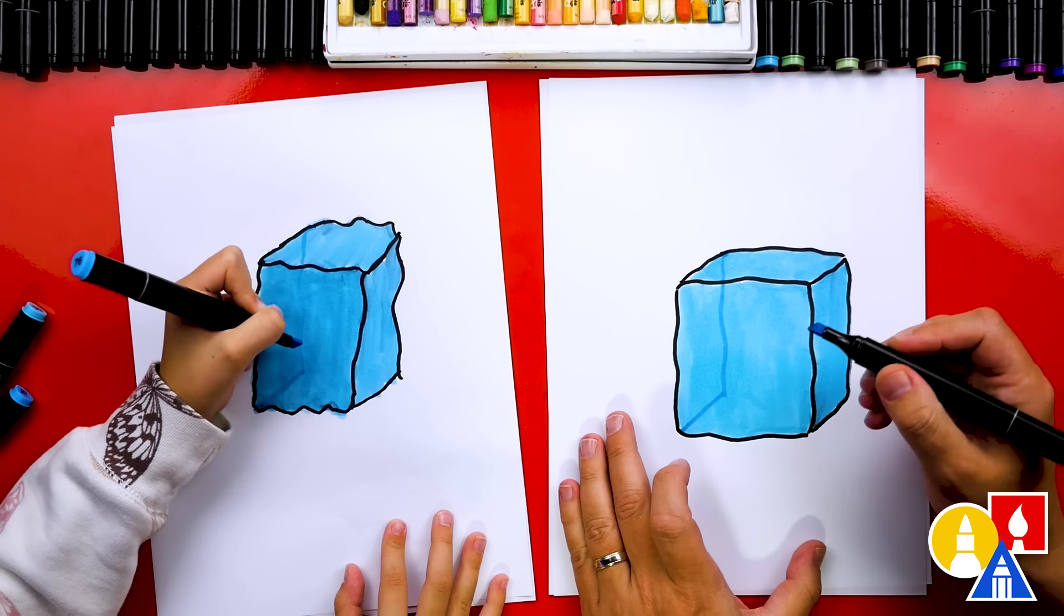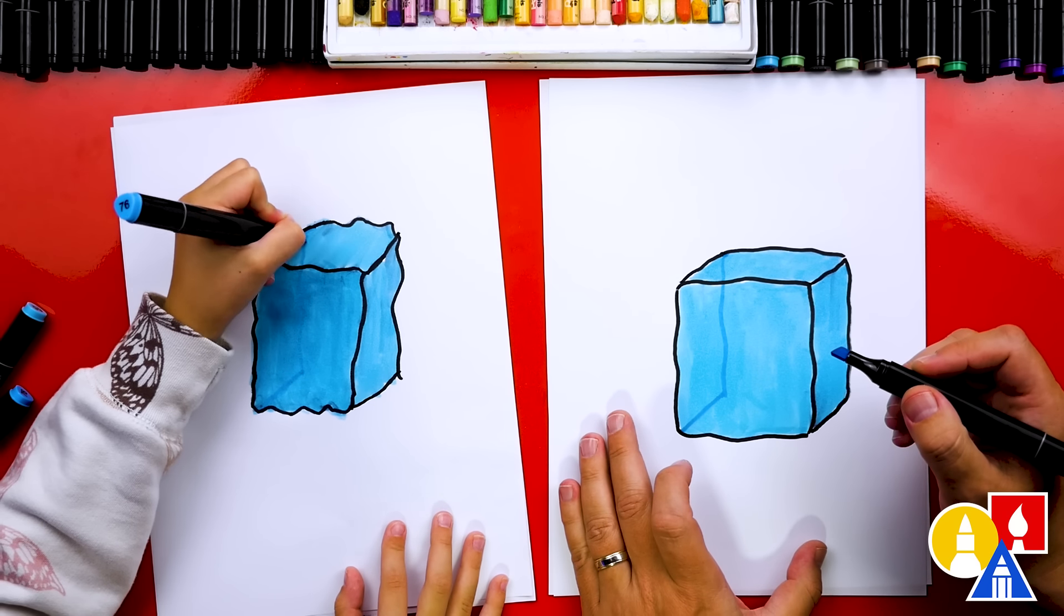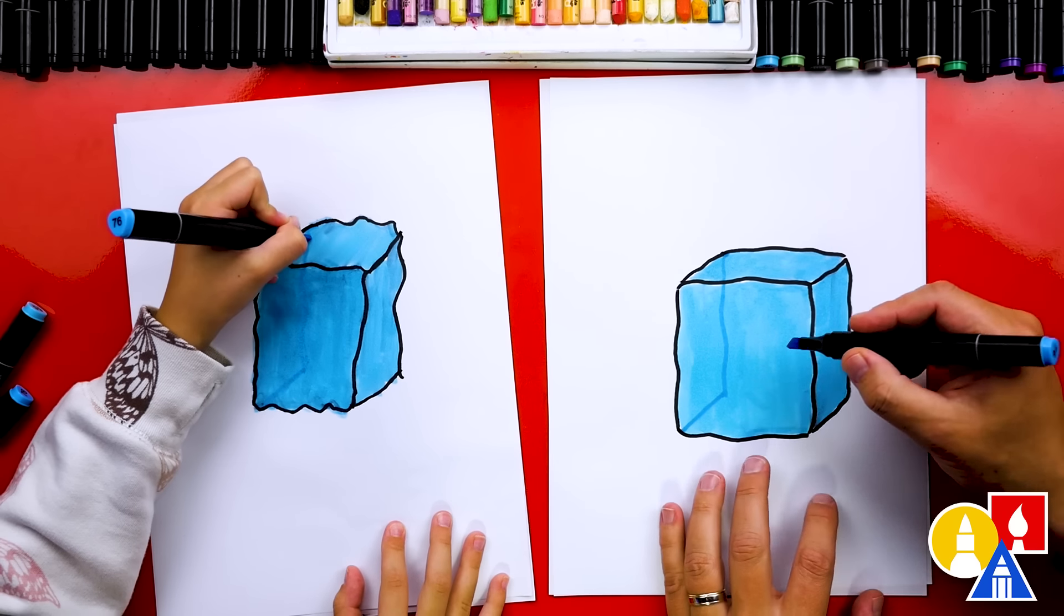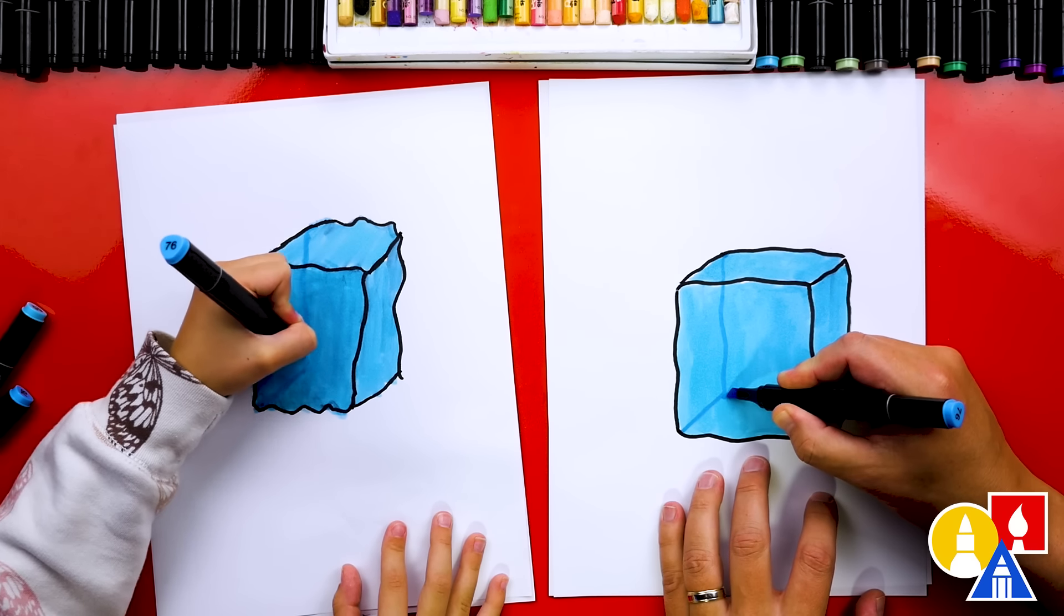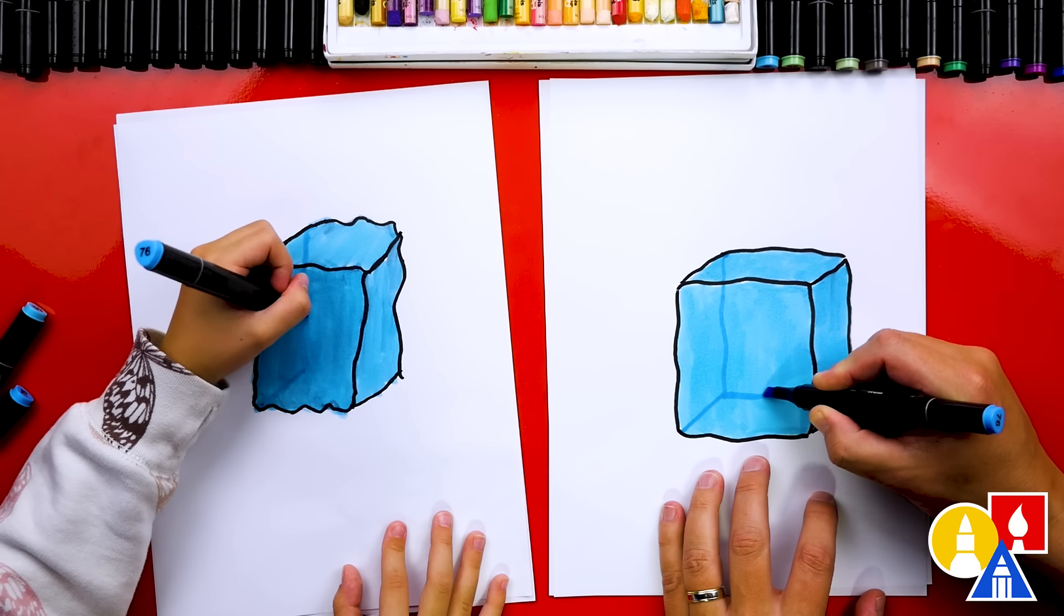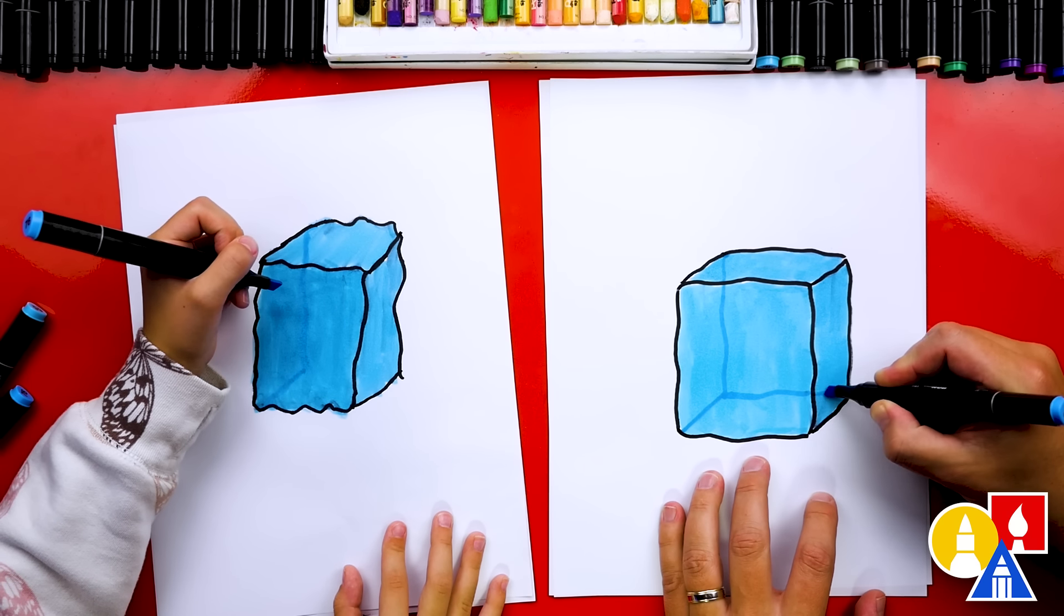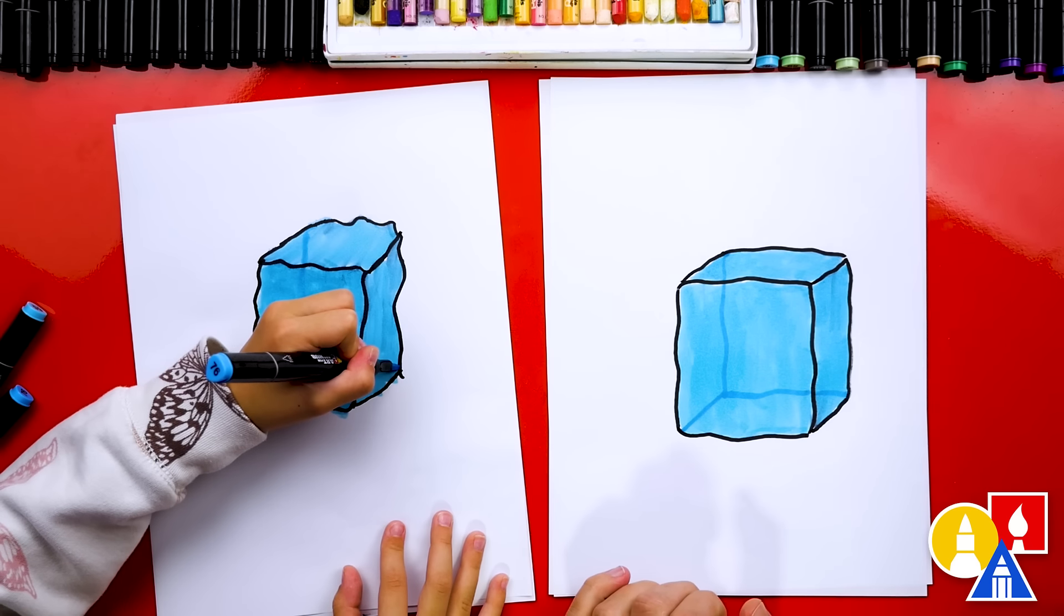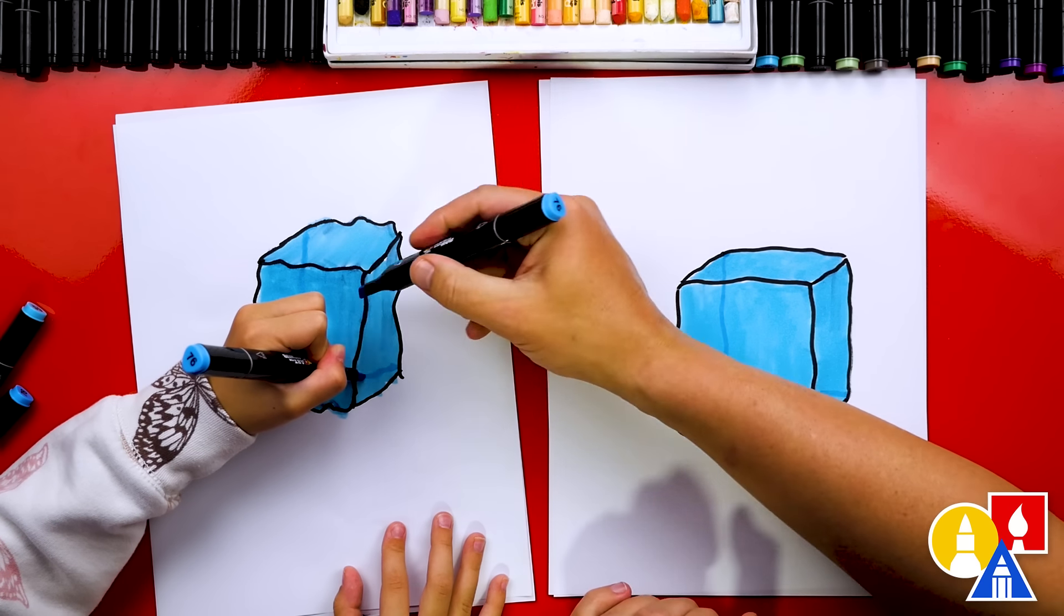Then we're going to draw a wiggly line that comes down. Not too wiggly. We're going to come down and connect to that diagonal line. Yes. And then you can go over it maybe one or two times. There you go. Make it a little darker. And then we're going to connect from this corner over to this corner. Right here.